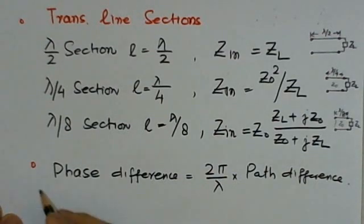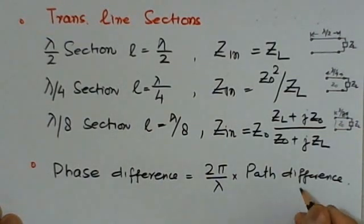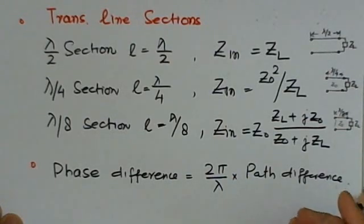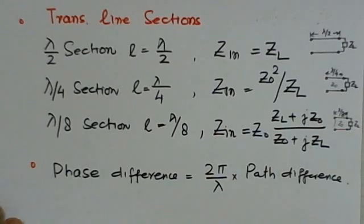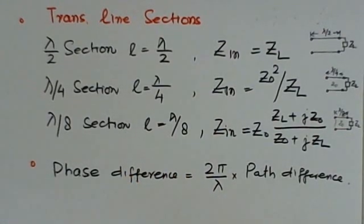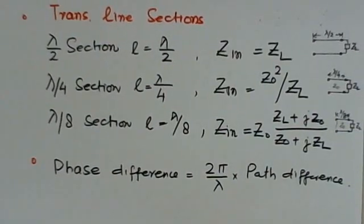One of the very important parameters is the phase difference. You can always find a phase difference in terms of the path difference: 2 pi by lambda into the path difference. If we know these relations, most of the relations are covered in these topics, but still, if some are left out, we will talk when we discuss the related problems.